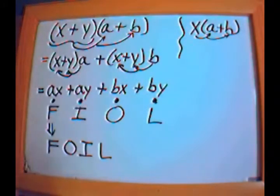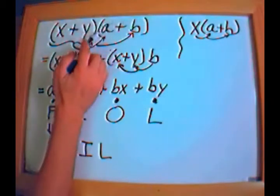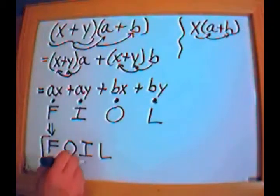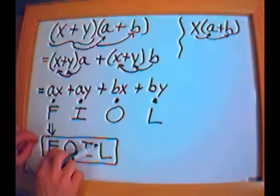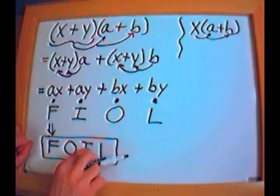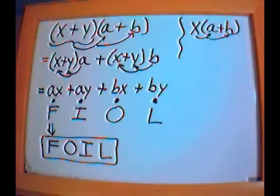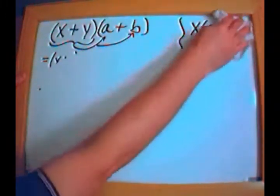F-O-I-L: First, Outside, Inside, Last. When you see something in parentheses multiplied by another set of parentheses, you can cut straight to the answer by multiplying the first terms, plus the outside terms, plus the inside terms, plus the last terms. From now on we're going to use this shortcut. There's nothing magic about FOIL — it's exactly the same distributive process we've been doing, just a shortcut.